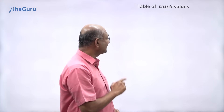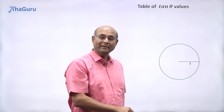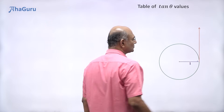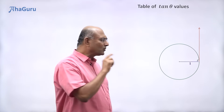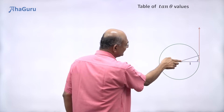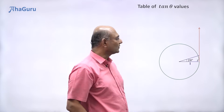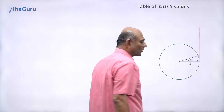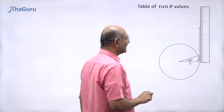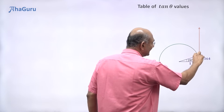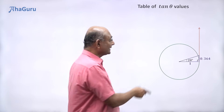Let us now find the value of tan theta for different angles. The first thing I am going to do is draw a circle with radius 1, and at this point I am going to draw the tangent to the circle. You know that the tangent is perpendicular to the radius, so this angle must be 90 degrees. Suppose I want to look at tan of 20 degrees. I will draw a line that makes an angle of 20 degrees with the original line. So this angle is 20 degrees. From the point where it intersects the tangent, I am going to draw this line and measure its length.